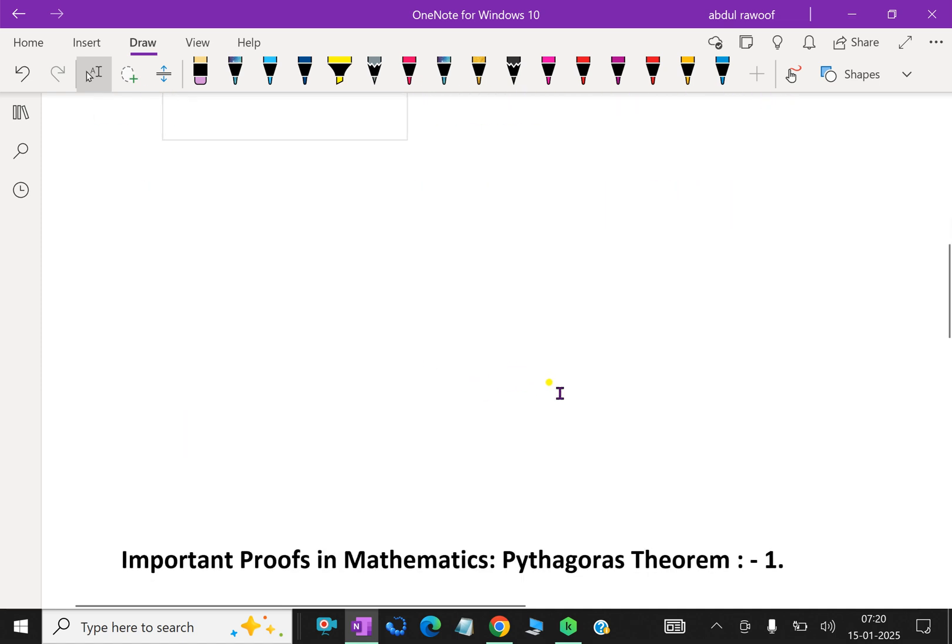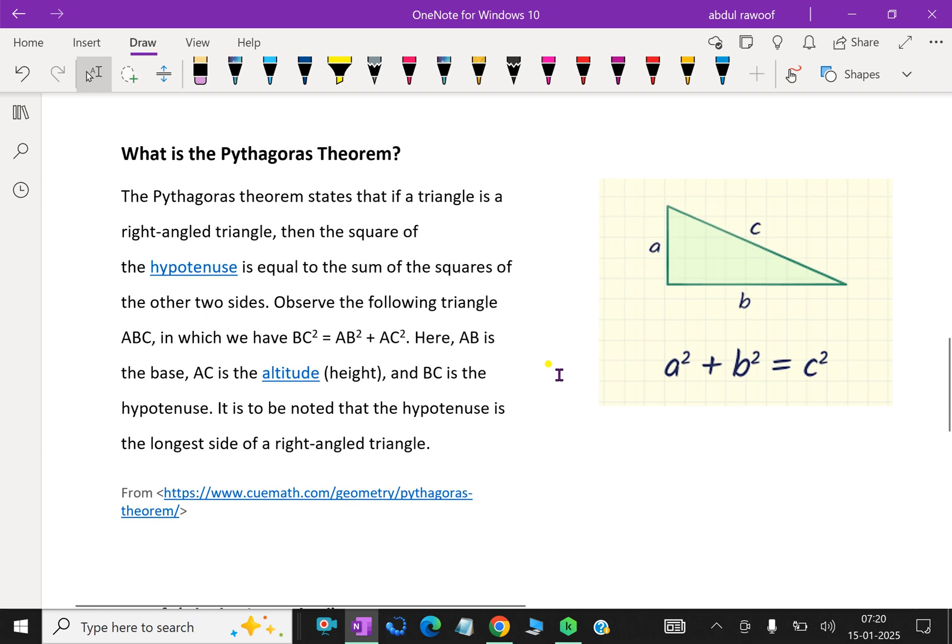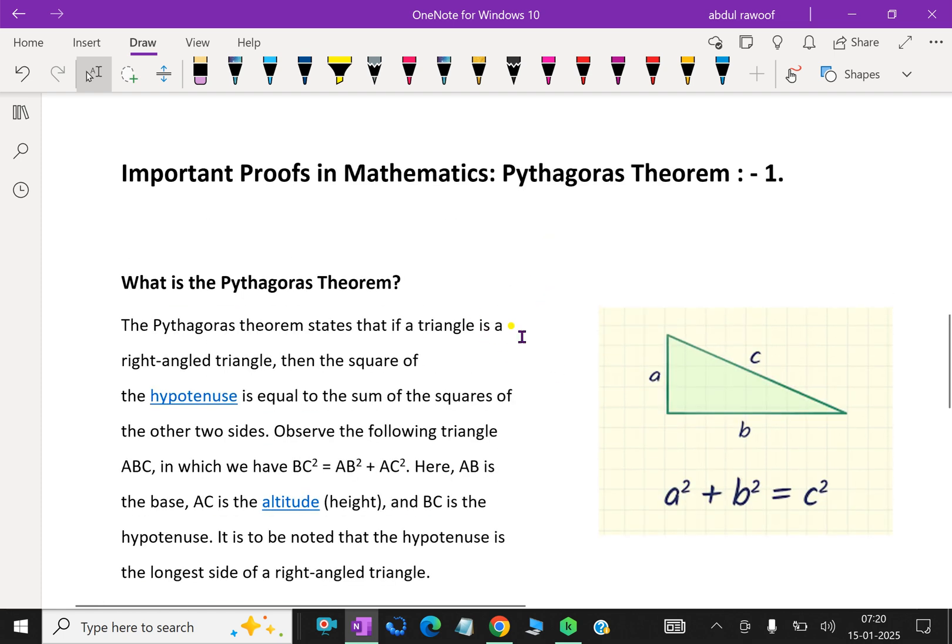Now let us start about the proof of this theorem. First of all, we talk about the Pythagorean theorem. The Pythagorean theorem states that if a triangle is a right-angled triangle, then the square of the hypotenuse is equal to the sum of the squares of the other two sides.